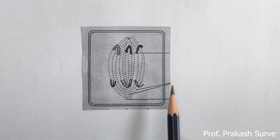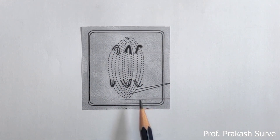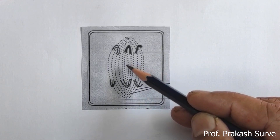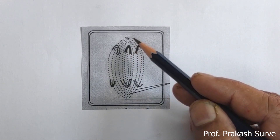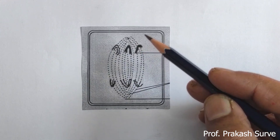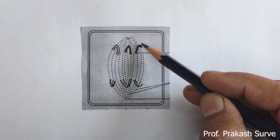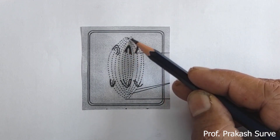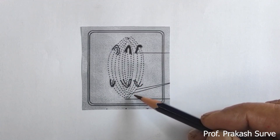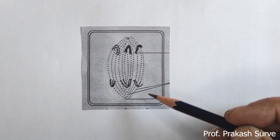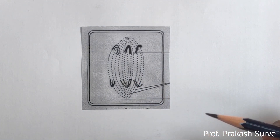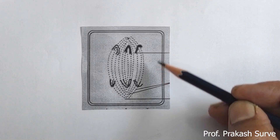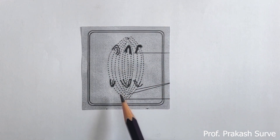Next is anaphase one of meiosis one. What we observe: the spindle fibers start condensing and become shorter, pulling the chromosomes to the opposite poles. Half the chromosomes shift to one pole and half to the other. Separation and dragging of the recombinant homologous chromosomes towards the opposite poles takes place in this stage.